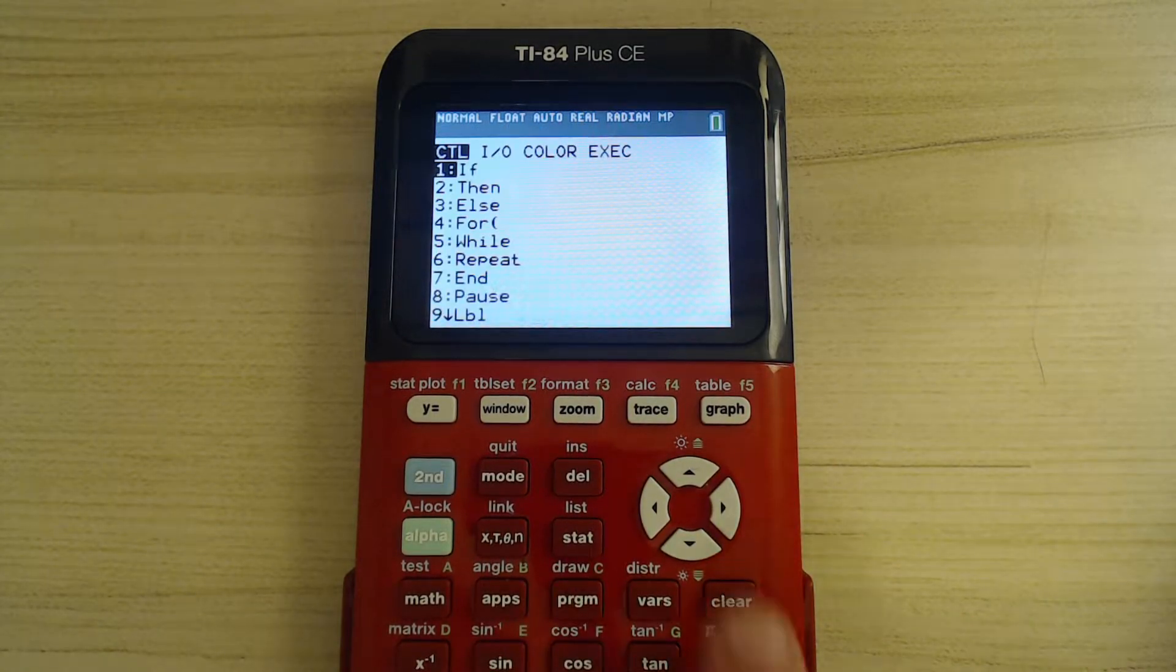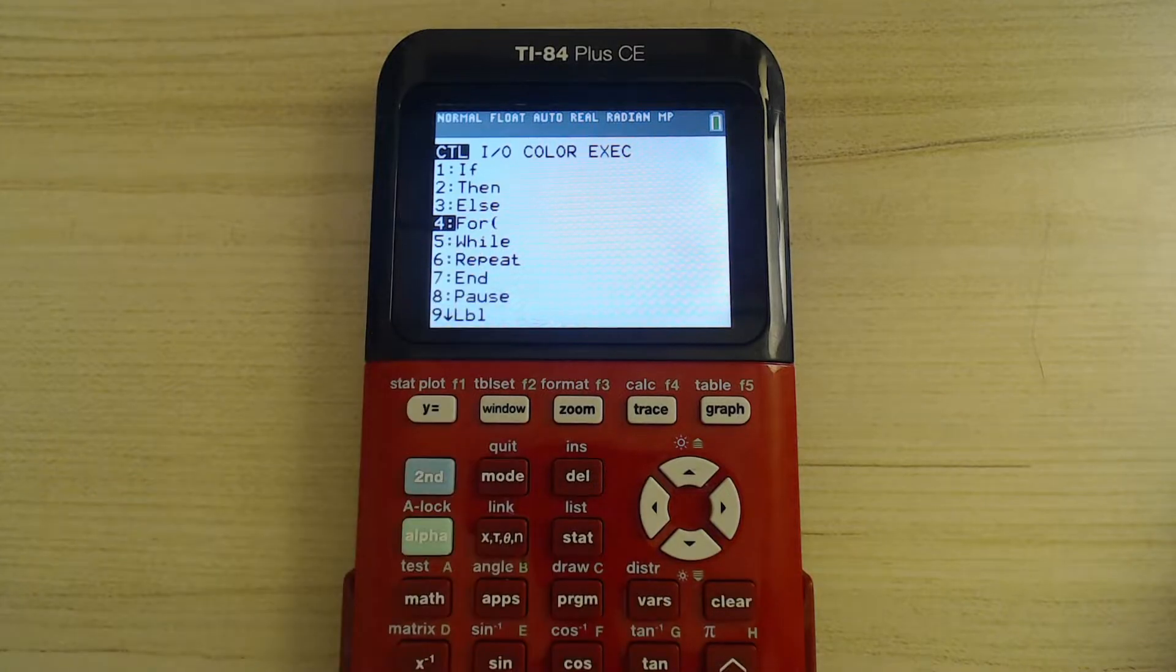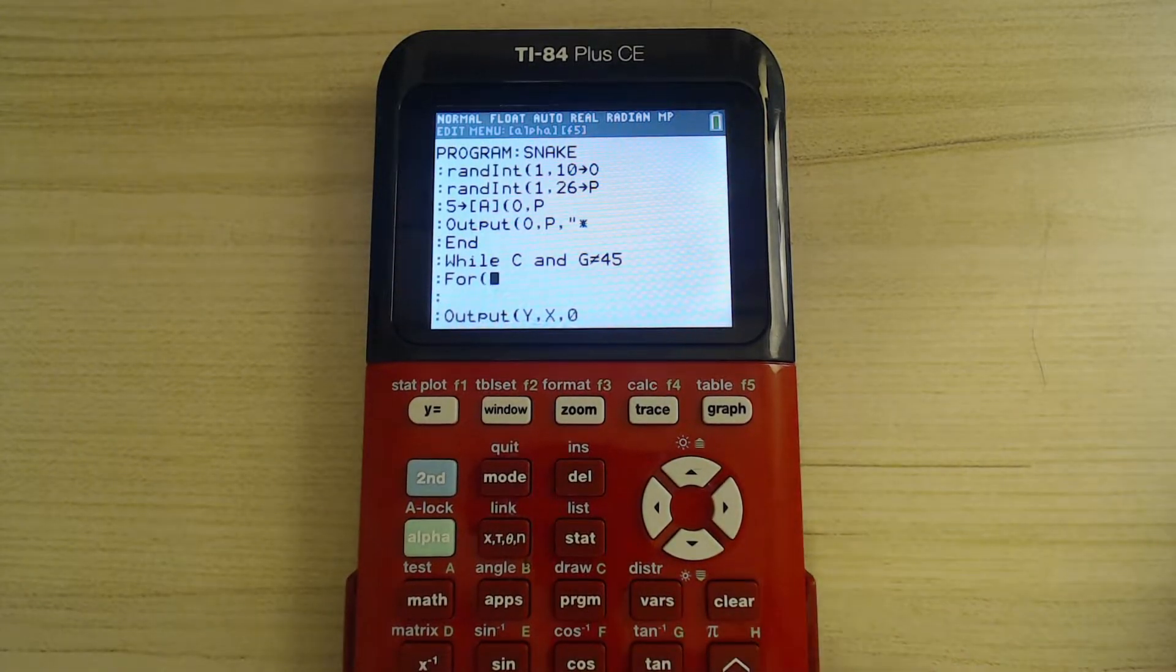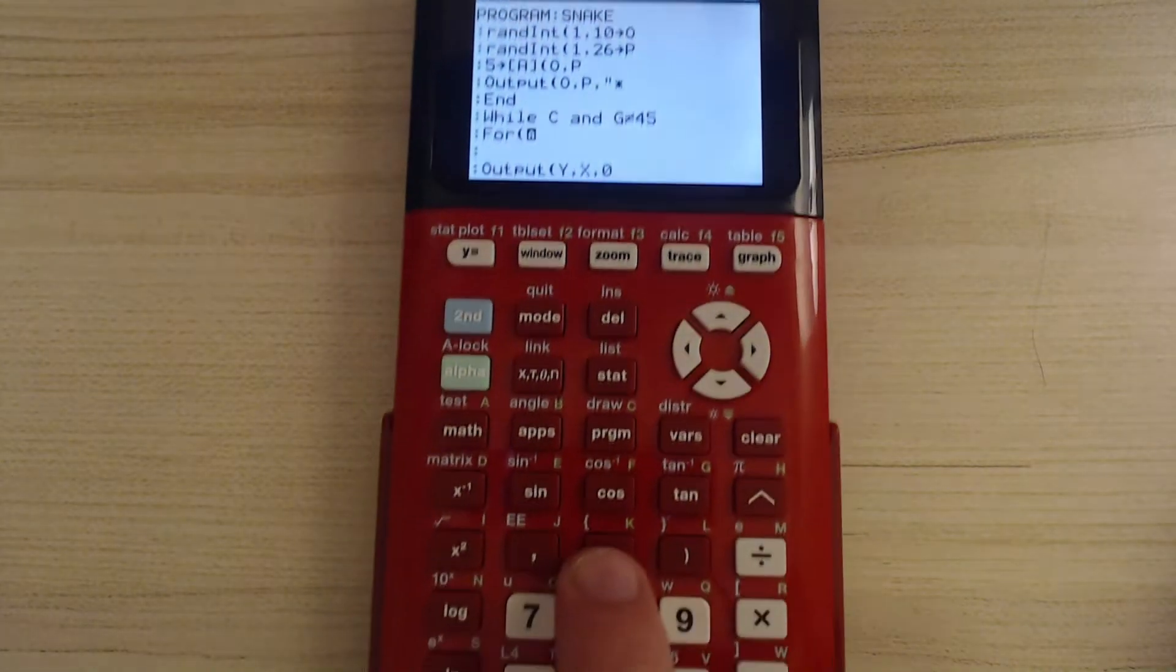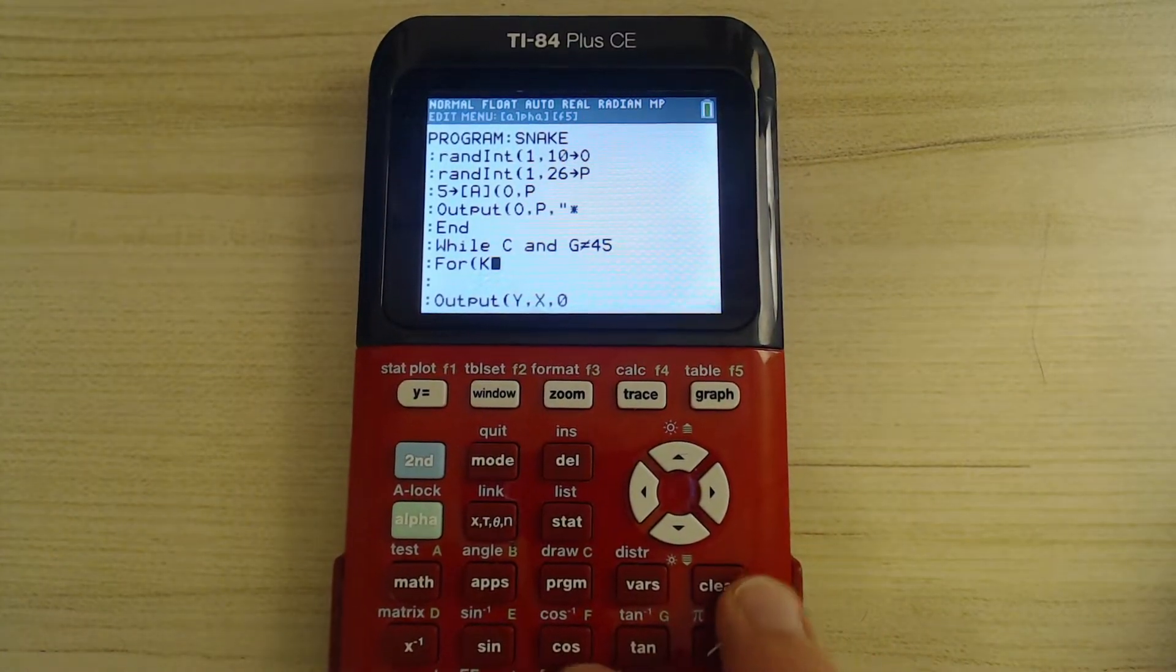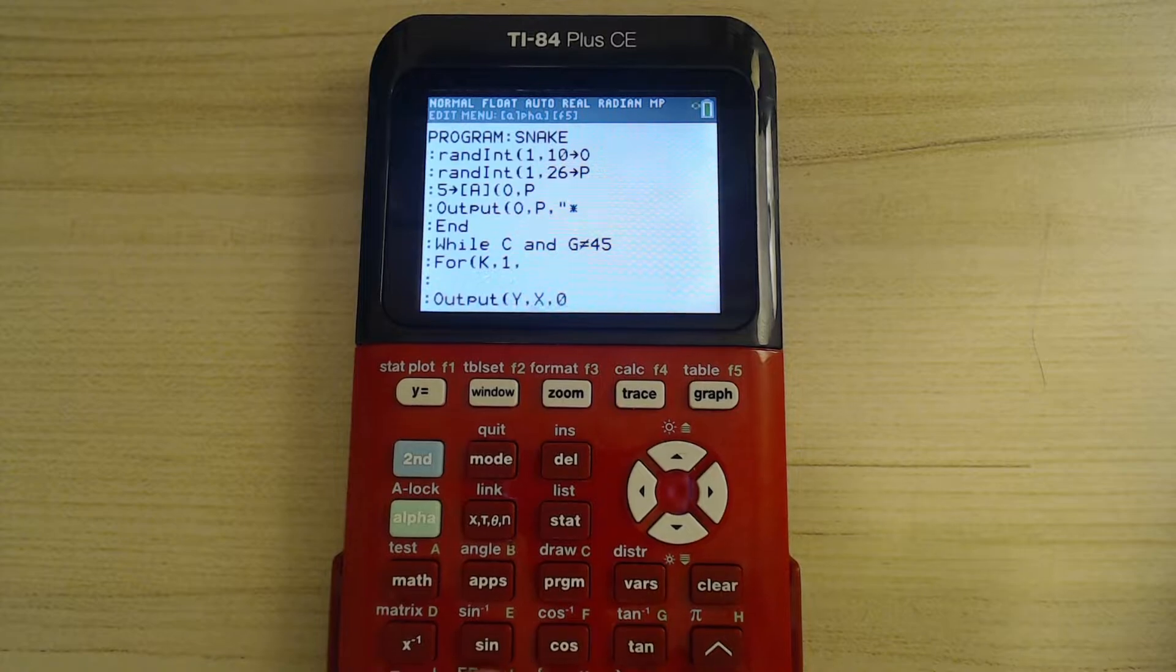So now we're going to press program, and you're going to scroll down to command 4. That's basically a loop in the program editor. We're going to do K, so you're going to press alpha, and then the open parenthesis button, which is right there above 8. So we're going to do K, and then comma, 1, comma, 50.